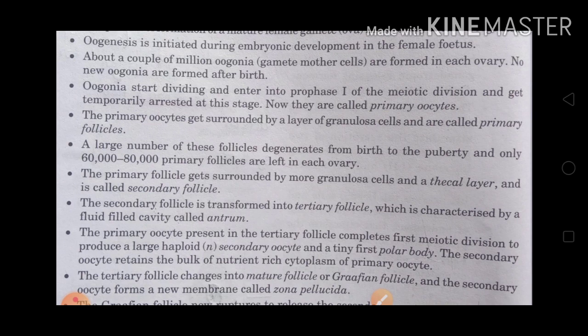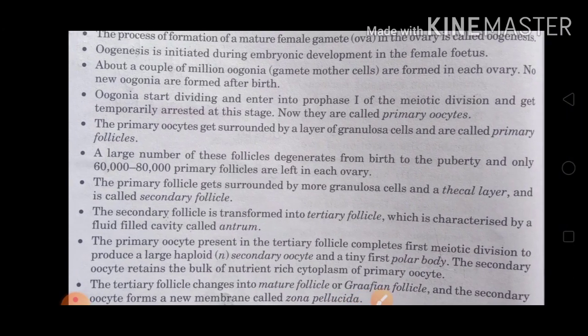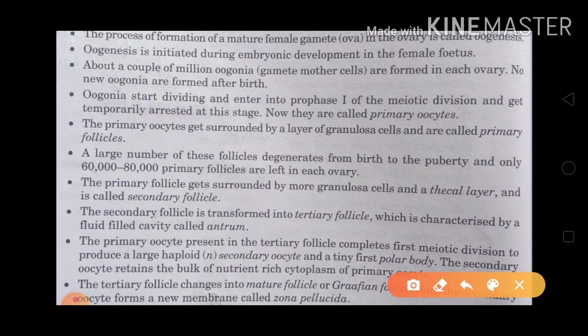A large number of these follicles degenerate from birth to puberty, and only 60 to 80 thousand primary follicles are left in each ovary. This is an important point — from birth to puberty, follicles degenerate in large quantities, leaving only 60 to 80 thousand primary follicles in each ovary.